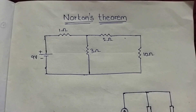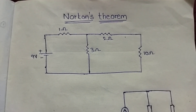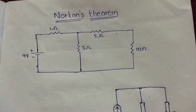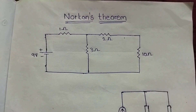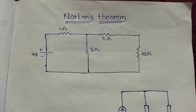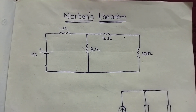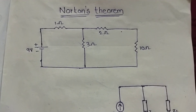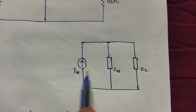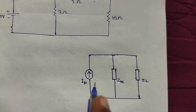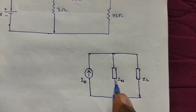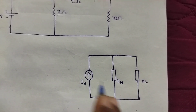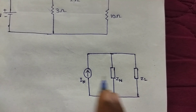This is an example of a problem. Norton's theorem states that a complex circuit consisting of sources and impedances can be converted into an equivalent Norton's circuit. The equivalent circuit will transfer to a simplified form — we have to change the complex circuit to the equivalent circuit. The equivalent circuit consists of Norton's current, impedance, and load impedance, and these values are parallel connected to each other.